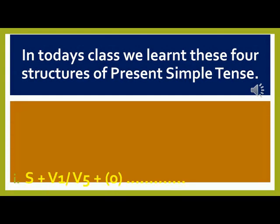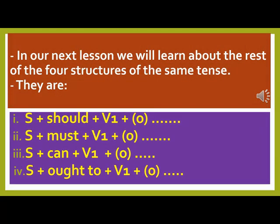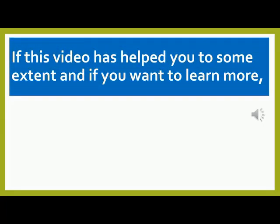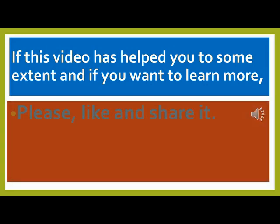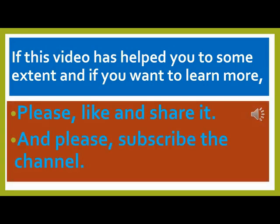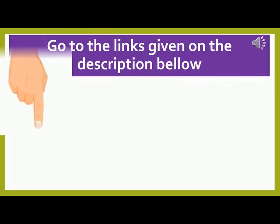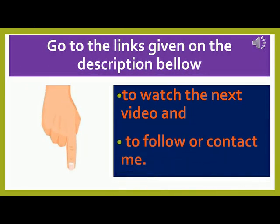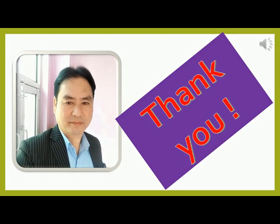In today's class, we learned these four structures of present simple tense. In our next lesson, we will learn the remaining four structures of the same tense: Subject + should + V1 + object; Subject + must + V1 + object; Subject + can + V1 + object; and Subject + ought to + V1 + object. If this video has helped you, please like, share, and subscribe to the channel. Go to the links in the description below to watch the next video and to follow or contact me. Thank you so much for watching. See you in the next video. Bye.